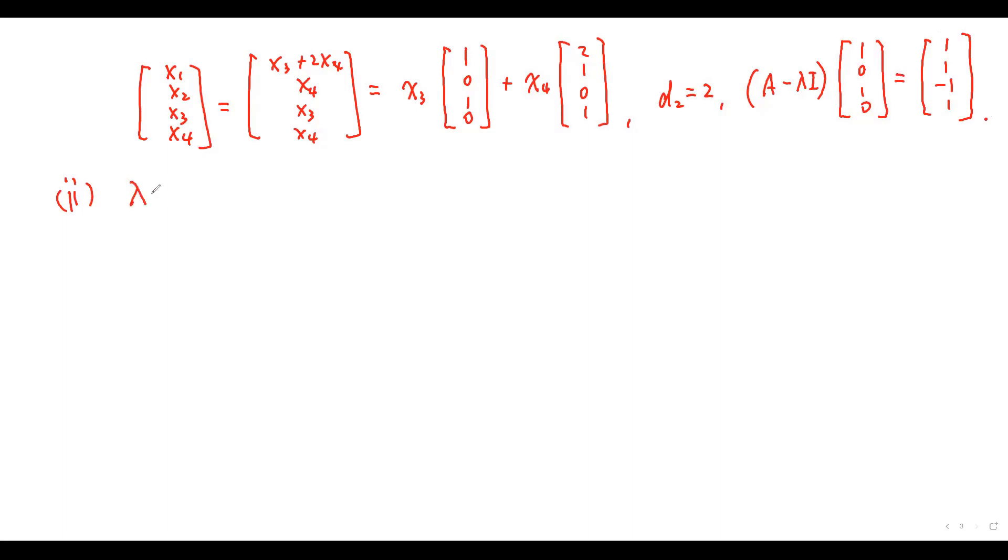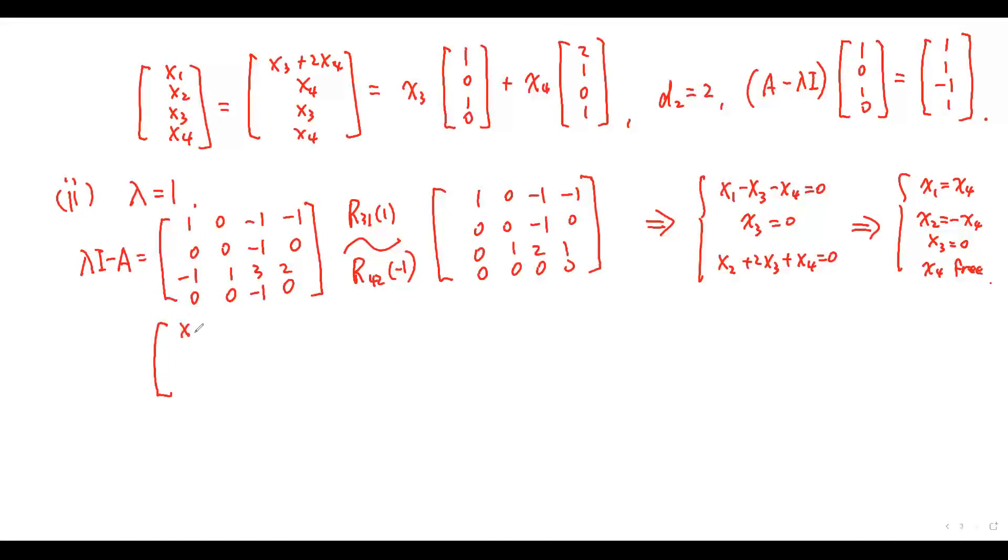Now, for eigenvalue equals one, this matrix equals zero. By row operations, we get that matrix. From this matrix, we get the equation. So, the eigenvector is given by that one.